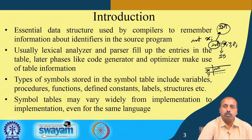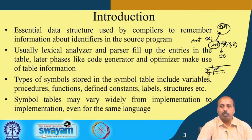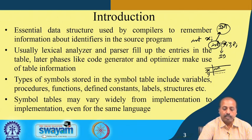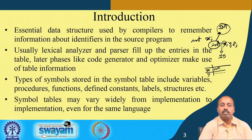Later phases like code generation and optimization will use this symbol table information, because it is very important to know the type of individual symbols to allocate proper space for them. Types of symbols stored in the symbol table include variables, procedures, functions, defined constants, labels, structures, etcetera.